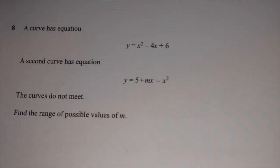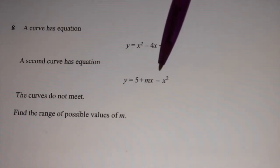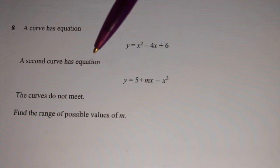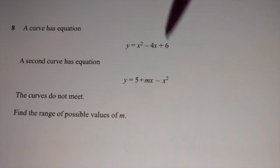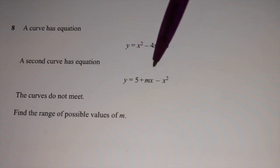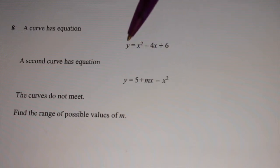A question from June 2012, question 8. A curve has got this equation y equals X squared minus 4X plus 6. A second curve has equation y equals 5 plus MX minus X squared. The curves do not meet. Now, whenever you're talking about anything intersecting, whether it actually intersects or not, you merge the two curves together or the two lines or whatever. Because I've got Y equals and Y equals, I can just put this Y equals here, 5 plus MX minus X squared up there instead of Y. So that's what I'm going to do first of all.